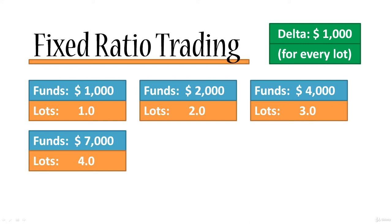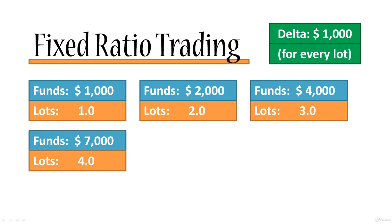Now we have four lots trading. All transactions we're conducting are four lots each. Maybe 50 transactions or three weeks later, we get to the next step. In order to progress, the four lots have to increase our funds by four deltas. Currently our funds are $7,000, and four deltas means $4,000 more, bringing the total to $11,000. As soon as we have $11,000 on our account — however long it takes — we are allowed to increase our lots to five lots, and so on.